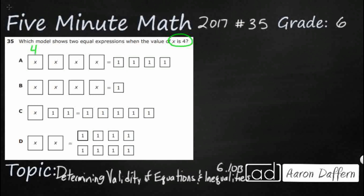Let's put 4 in each of these and just see if it equals. Now, the thing is, it doesn't really say whether all of these 4s in A and B are being multiplied or added. In this particular type of representation, you don't show multiplication like this. If you just stack these x's up next to each other, that means you're simply adding those x's.